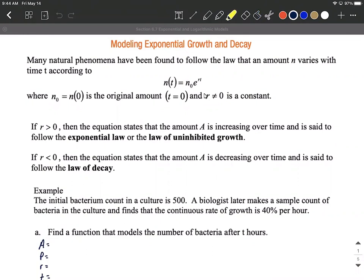So the other things that are pointing us towards this formula are things are getting bigger if our rate's positive. We call that exponential law or the law of uninhibited growth. So things are getting bigger, rate's positive. These are a couple of keywords that are gonna point you towards this formula. Or if our rate's negative, things are gonna be getting smaller or decreasing over time. We call that the law of decay.